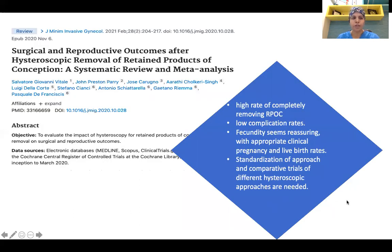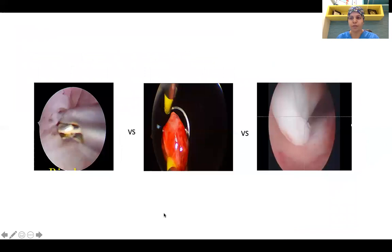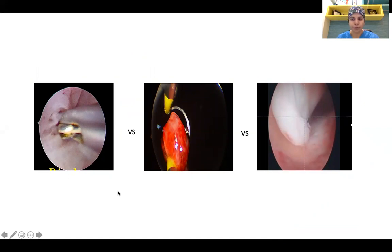A recent publication on surgical and reproductive outcomes after hysteroscopic removal of retained product of conception showed a high rate of complete RPOC removal, low complication rates, and reassuring fecundity with appropriate clinical pregnancy and live birth rates. Standardization of approach and comparative trials of different hysteroscopic approaches are still needed. Depending on expertise and equipment, you can use scissors and forceps, a cold loop, or a hysteroscopic morcellator. A loop with an active electrode can be used for Type 2 and Type 3 RPOCs where there is vascularity and vessel coagulation may be needed.